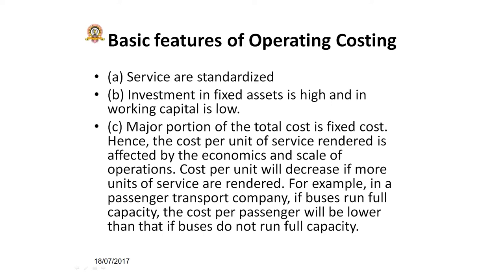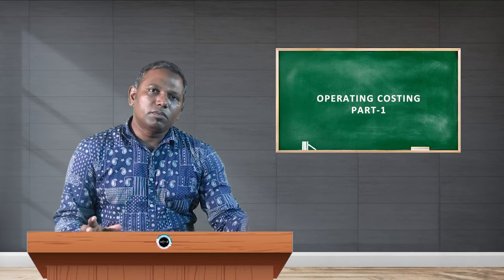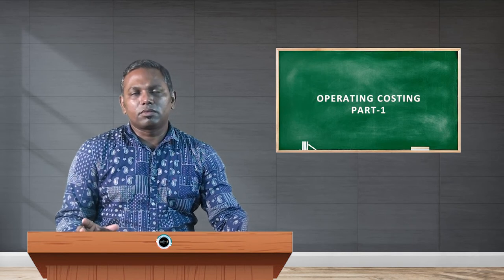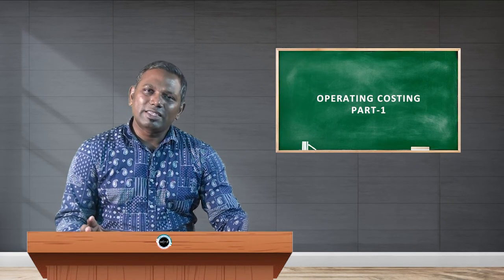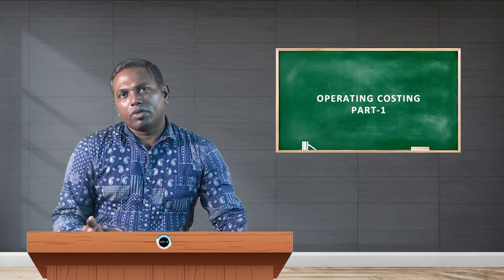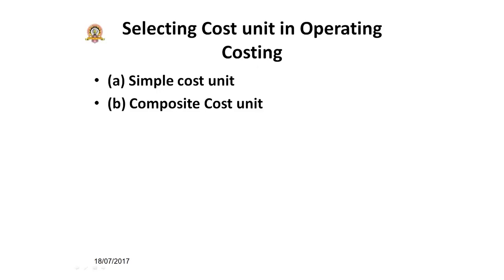Hence, the cost per unit of the service rendered is affected by economies of scale. The cost per unit will decrease if more units of services are rendered. For example, in a passenger transport company, if the buses run at full capacity, the cost per passenger will be lower than if the buses do not run at full capacity. A bus transportation company should run buses at full capacity to reduce the cost per unit. If they run with less capacity, the operating cost per passenger will be very high.